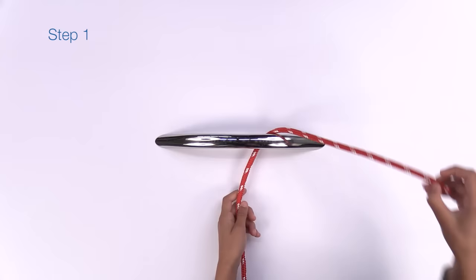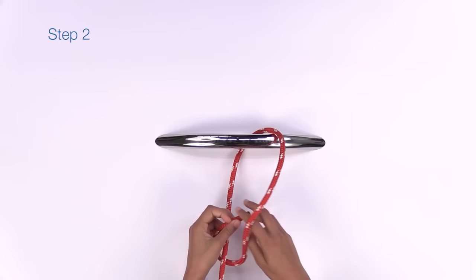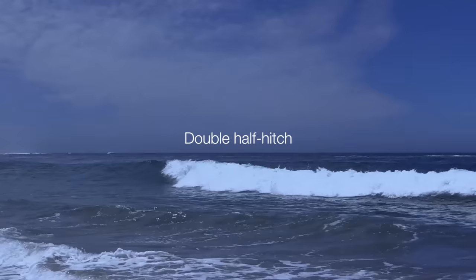Pass the rope around the railing and back across itself so it makes a loop. Then just pass the rope's end through the loop and pull it tight. You have just completed a half hitch.